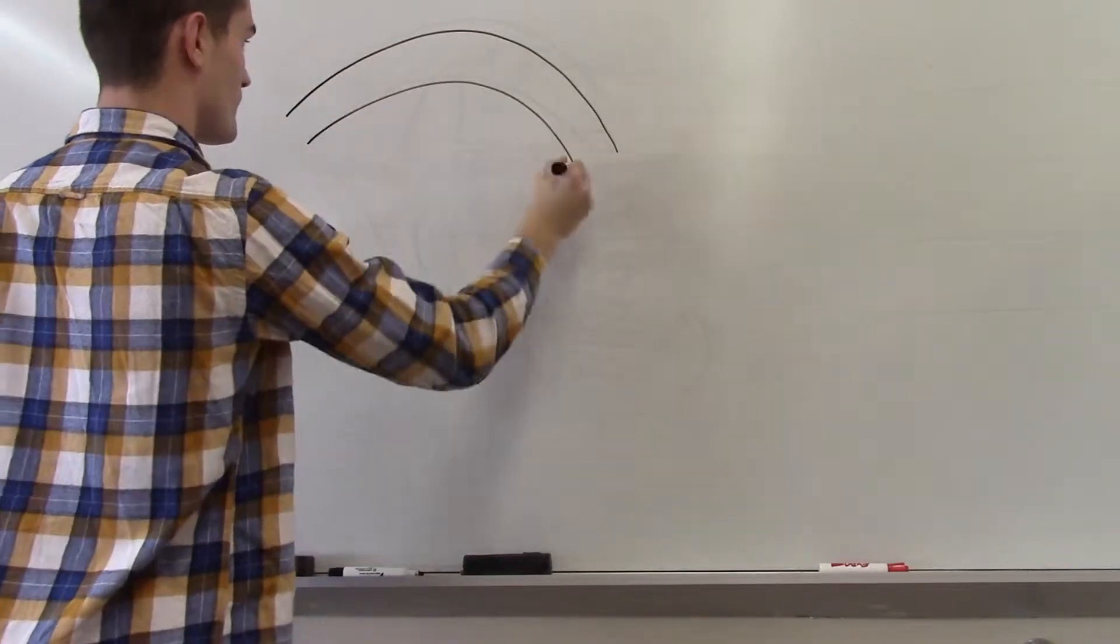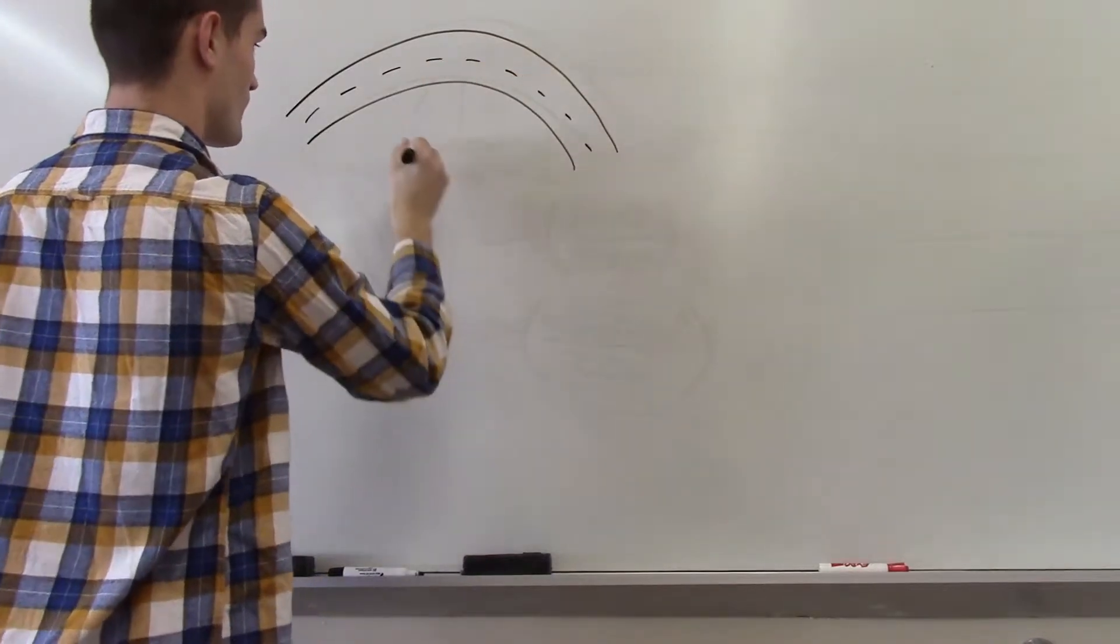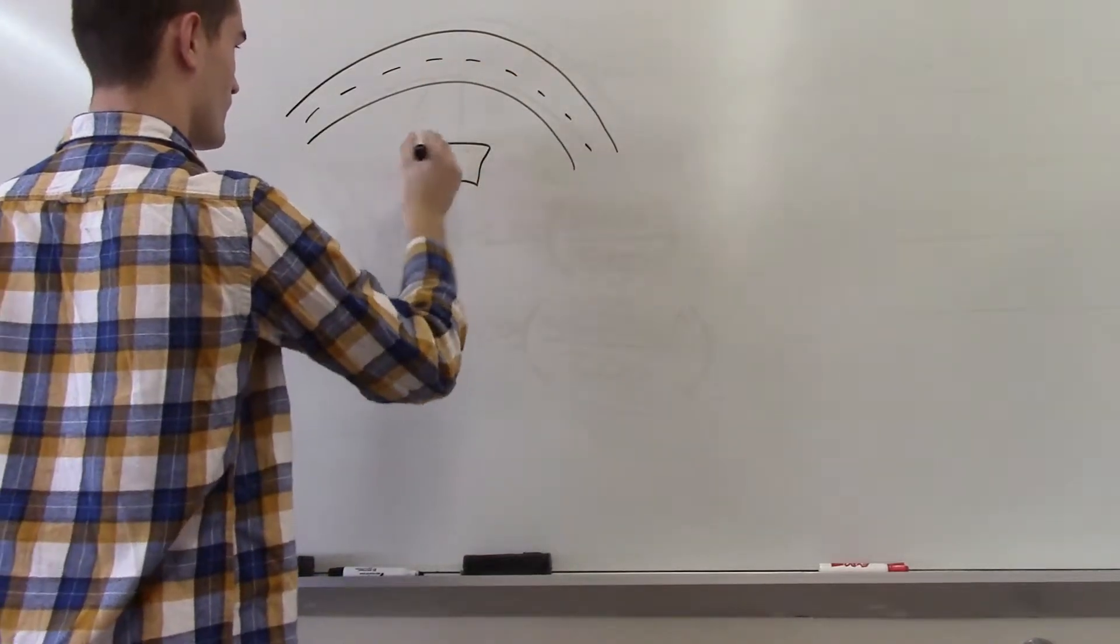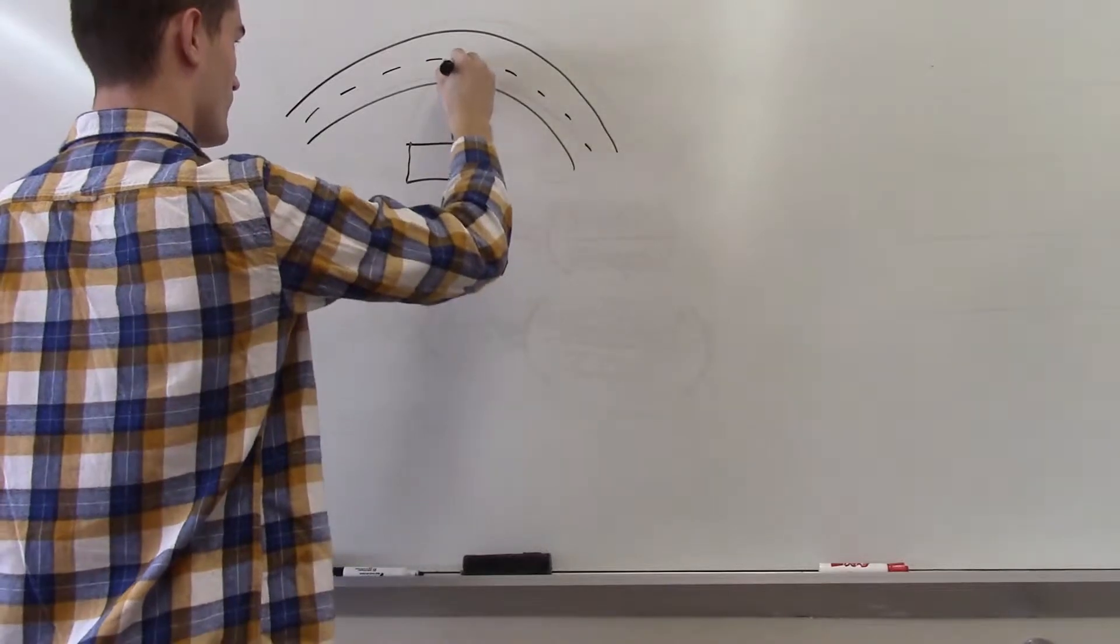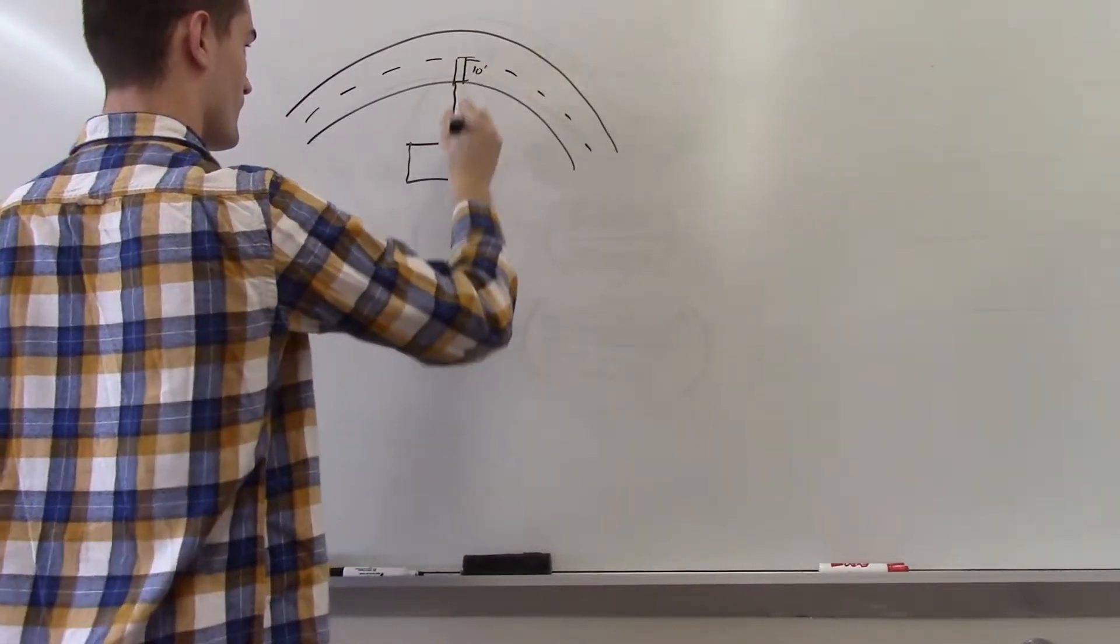A building sits 12 feet from the edge line of a roadway in a horizontal curve section. The width of the travel lane is 10 feet, the radius of the curve is 150 feet, and the required stopping sight distance is 125 feet.